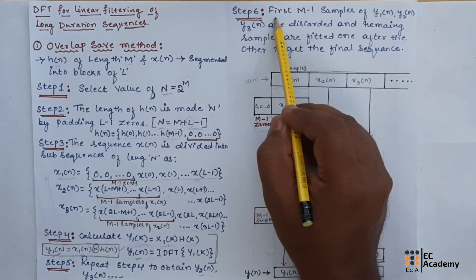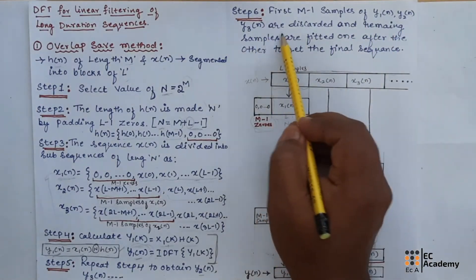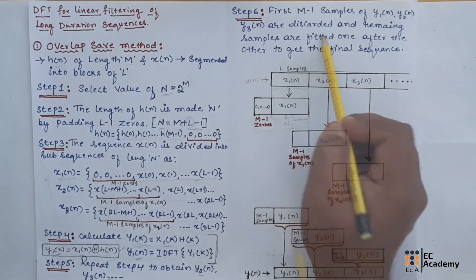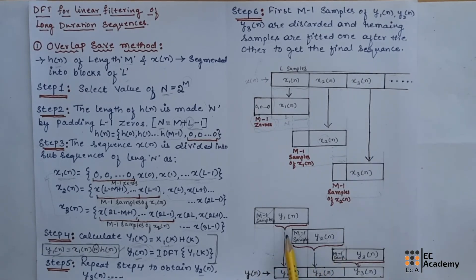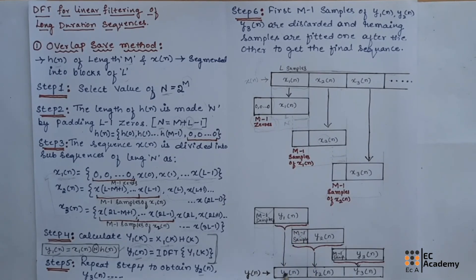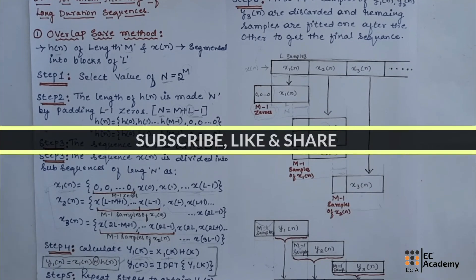In the final step, the first m minus 1 samples of y1(n), y2(n), and y3(n) are discarded. We will discard the initial m minus 1 samples, then take the remaining samples and write y1(n), y2(n), and y3(n), fitting these samples together to get the final output sequence.